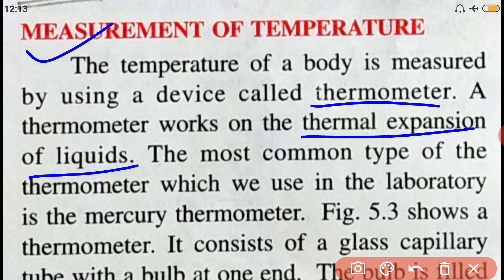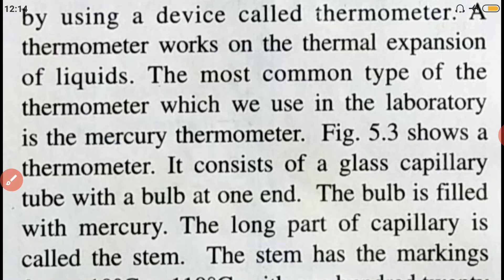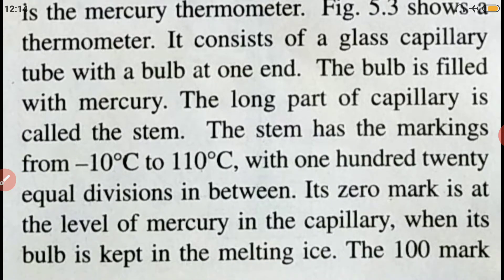The most common type of thermometer which we use in the laboratory is the mercury thermometer. We have an alcohol thermometer also. A thermometer consists of a glass capillary tube with a bulb at one end. The bulb is filled with mercury. The long part of the capillary is called the stem.